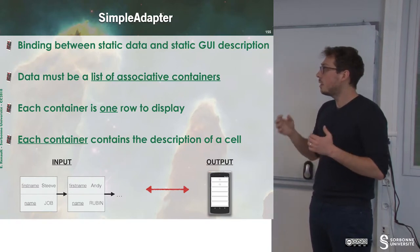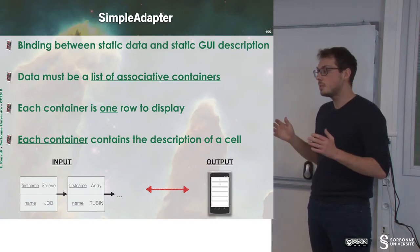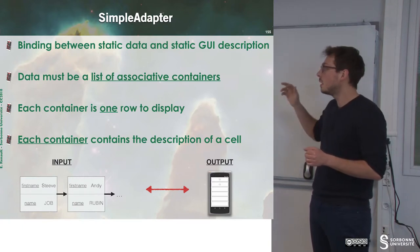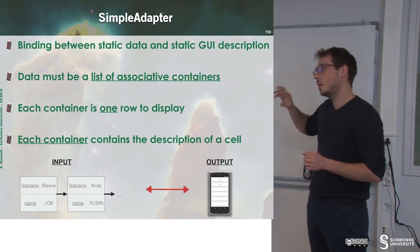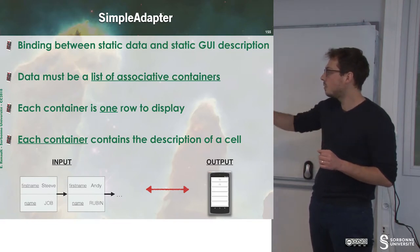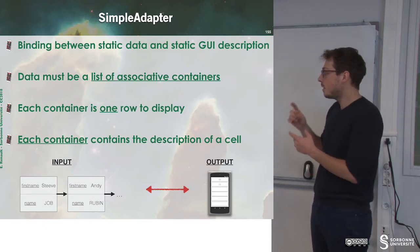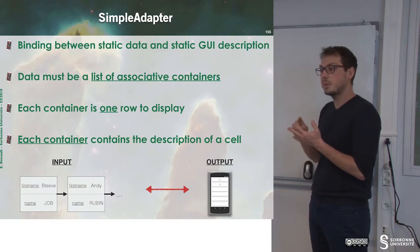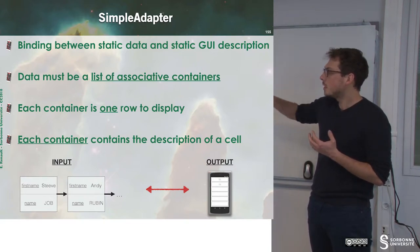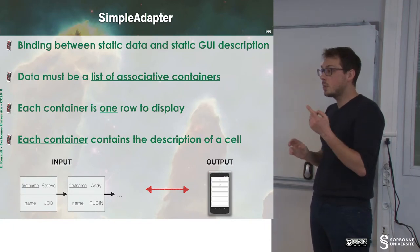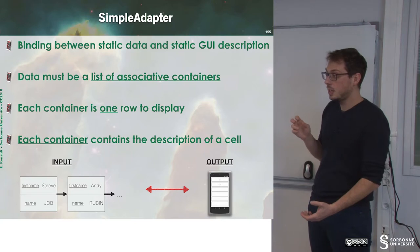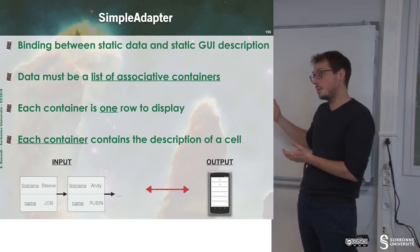The SimpleAdapter requires organizing data as a list of associative containers, where each container represents one cell of the list. For instance, we have two containers: the first container has first name and name, and the second container also has first name and name. The key is what we use inside the adapter to make the link between the view and the model, and the value is what will be displayed.